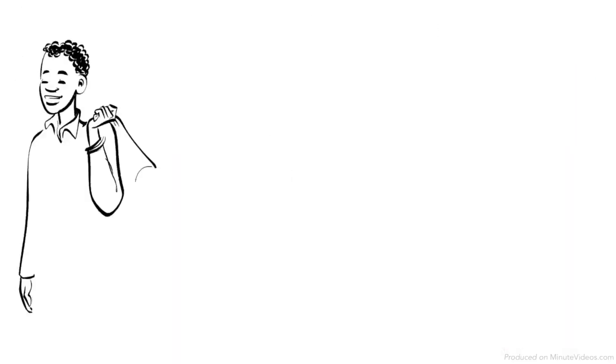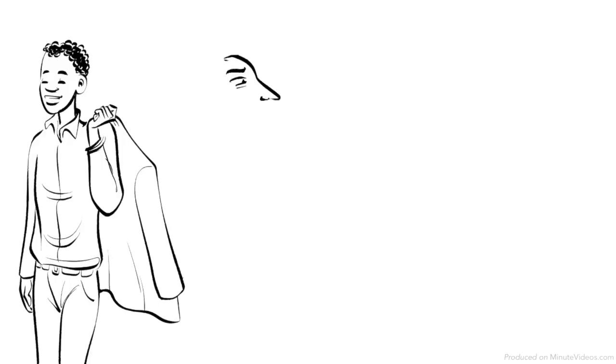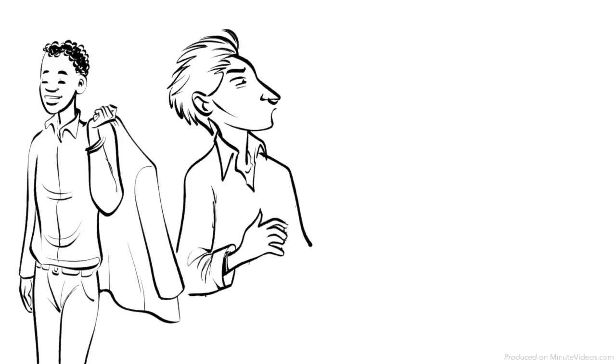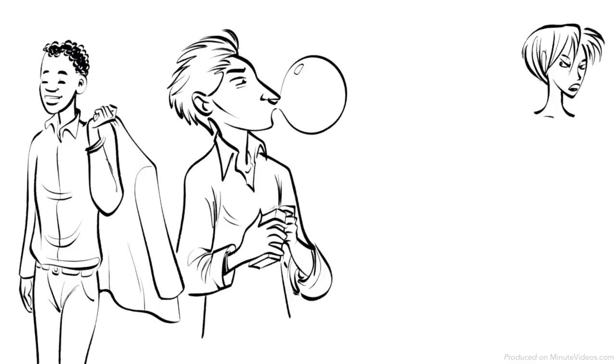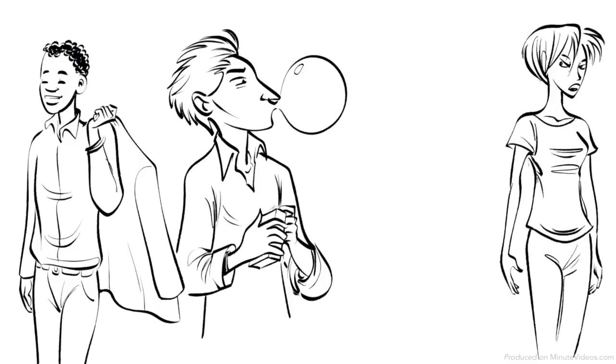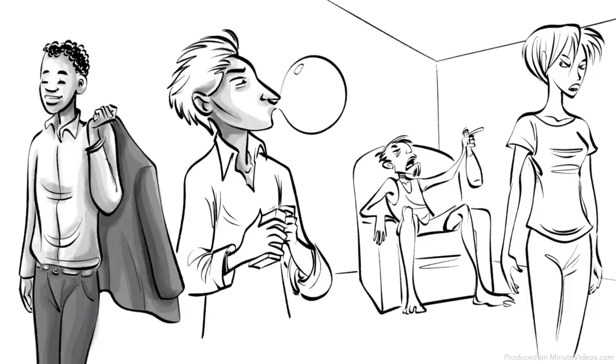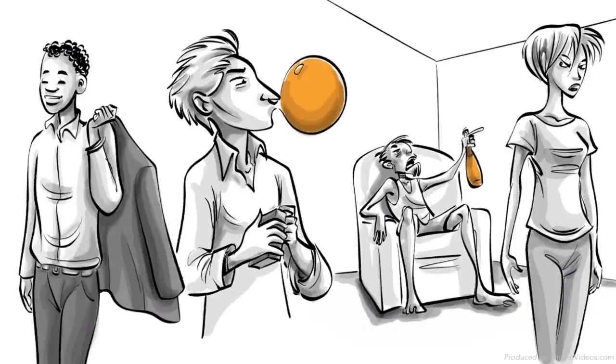Hans becomes a healthy and independent adult. Ernst suffers from trauma and develops an oral fixation. He tries to compensate for it by chewing gum all the time. Ida spends her entire life looking for the oral stimulation she was denied as an infant and therefore develops a manipulative and addictive personality.